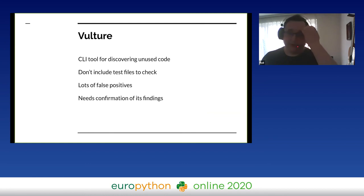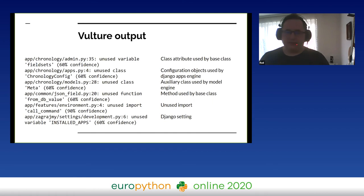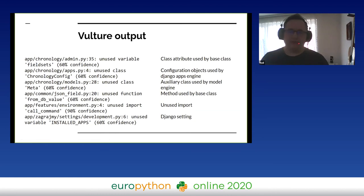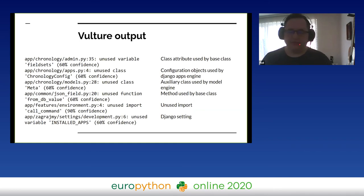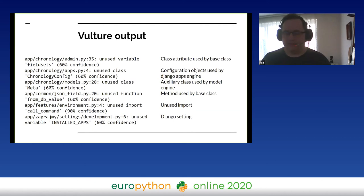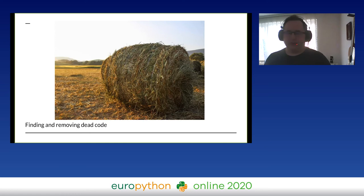At a more advanced level, there's a tool called Vulture that finds unused code, but it gives us lots of false positives. For example, a variable 'fieldsets' is used by Django admin — not explicitly in the code, but used automatically by Django or imported in settings. There are many problems with it, but for things like classes or functions, Vulture's findings can be helpful. You always need to remember that Vulture doesn't know everything — it just looks at the code. It's also good to exclude tests when running Vulture, because even if your code is unused, it might still have tests that import it.